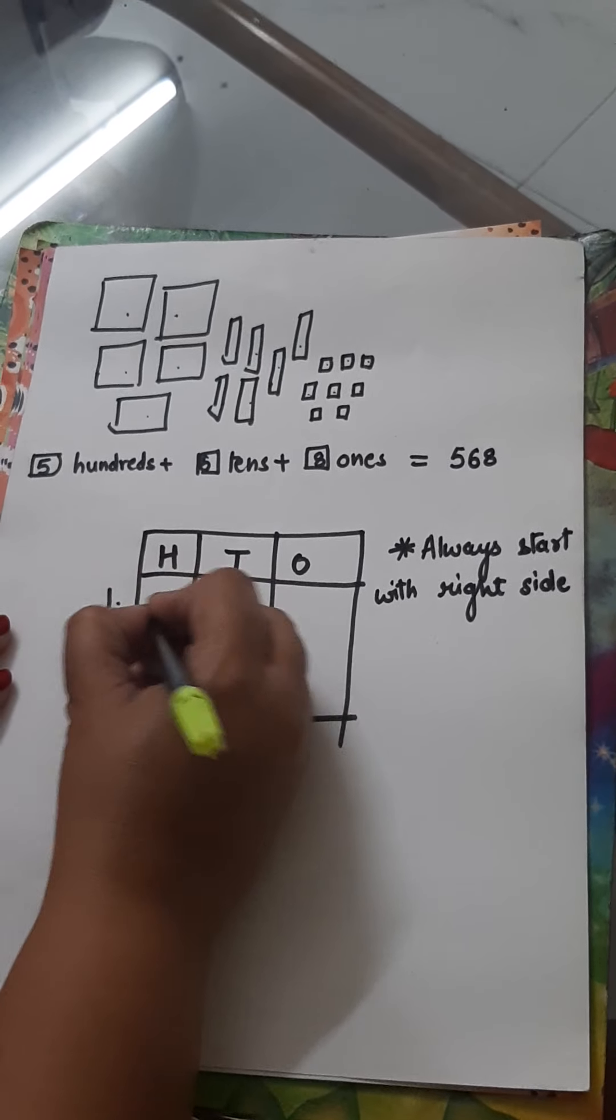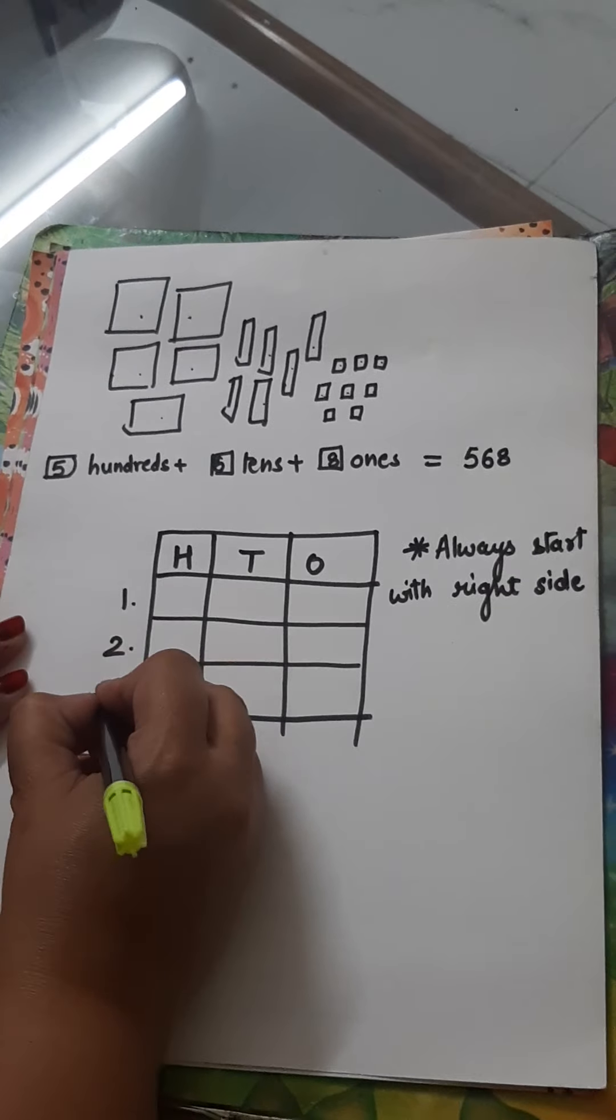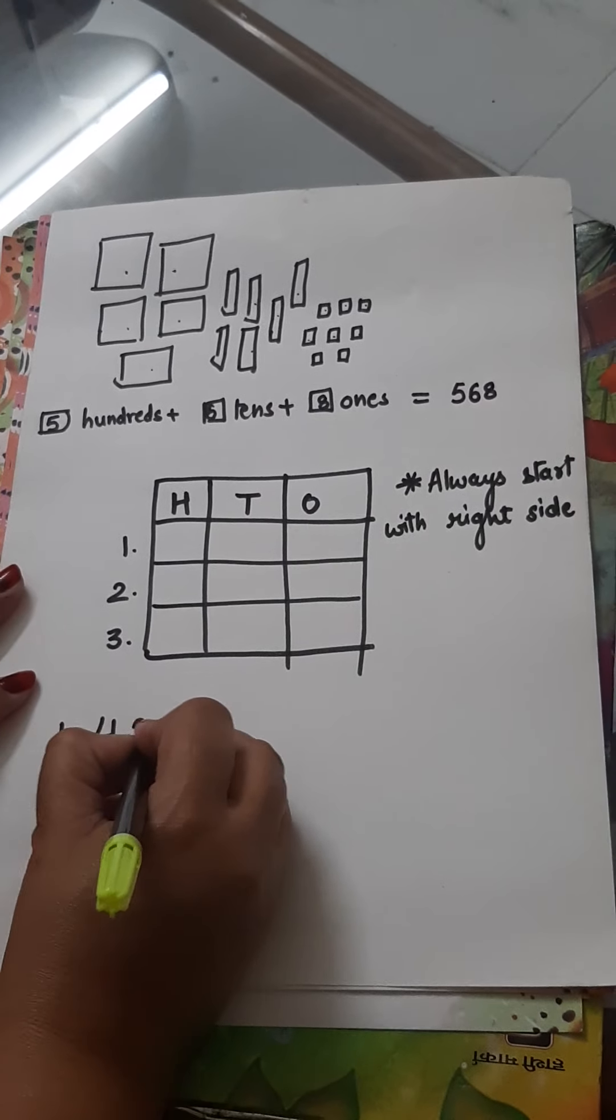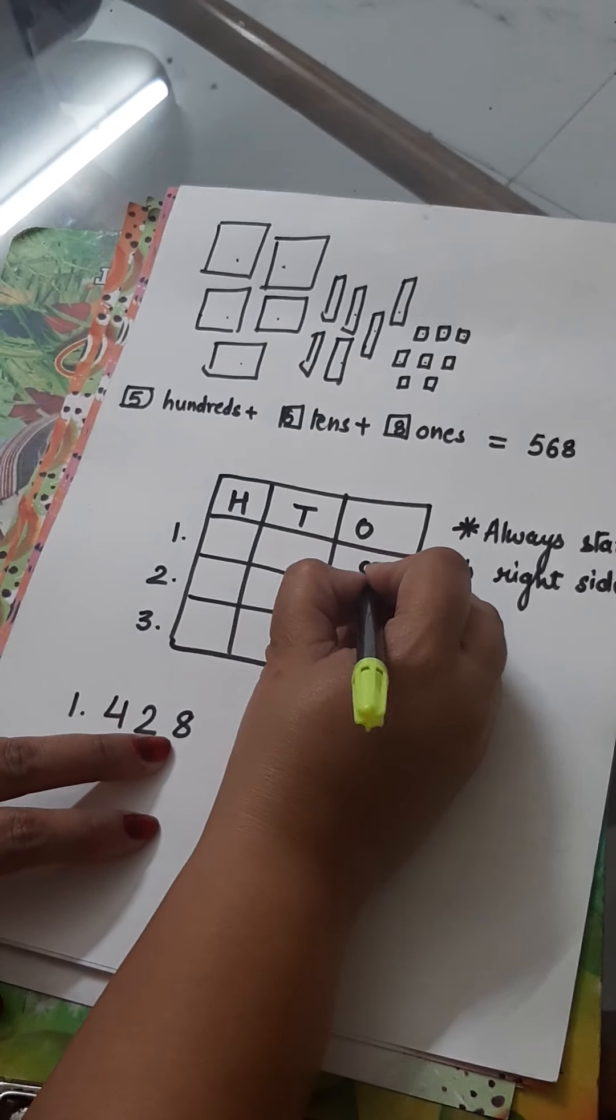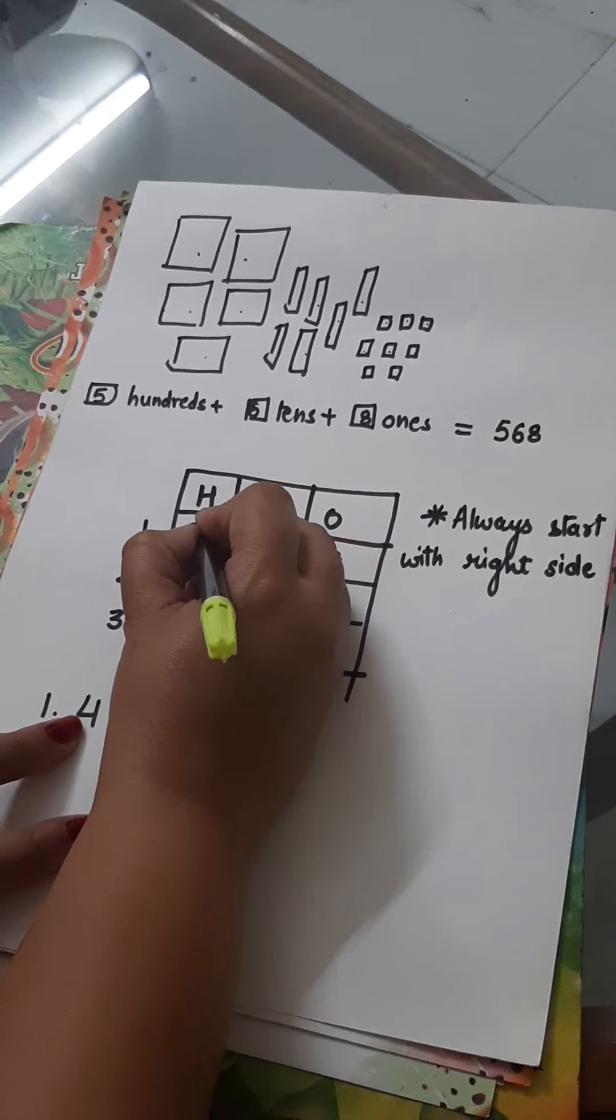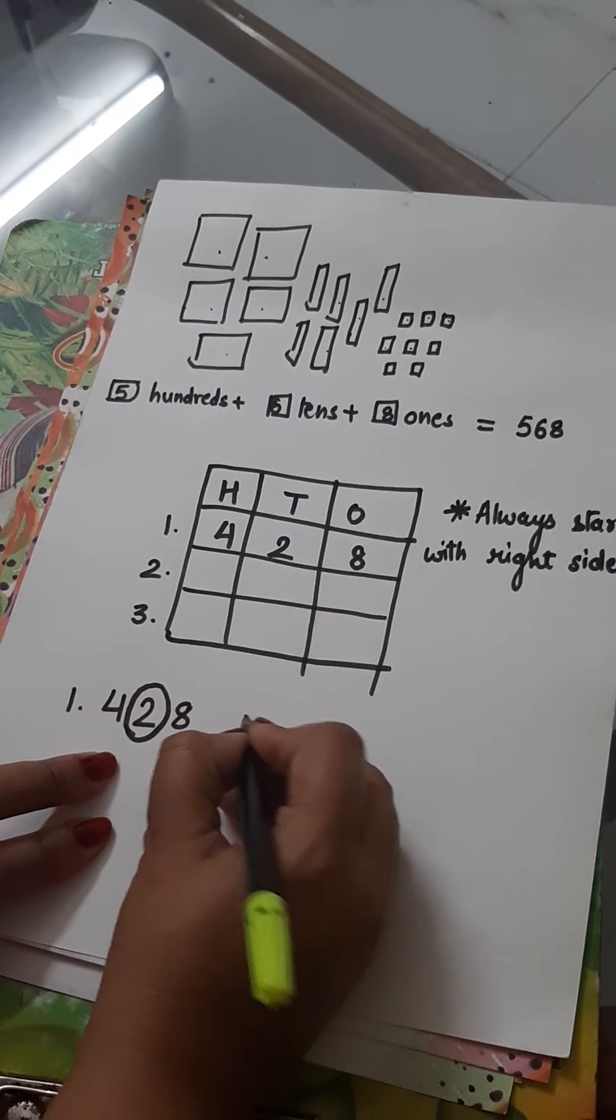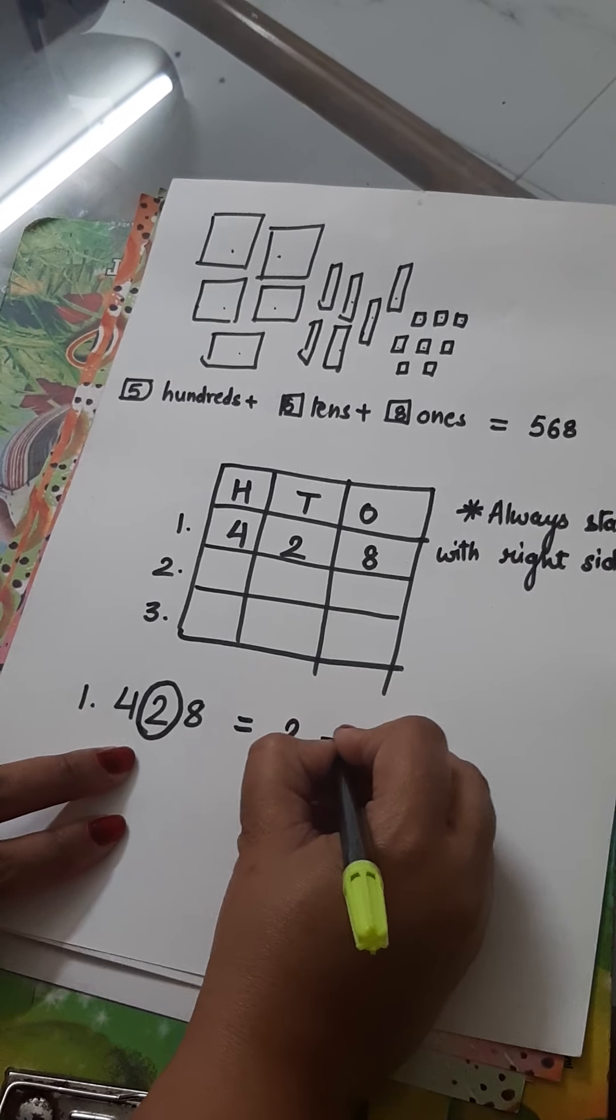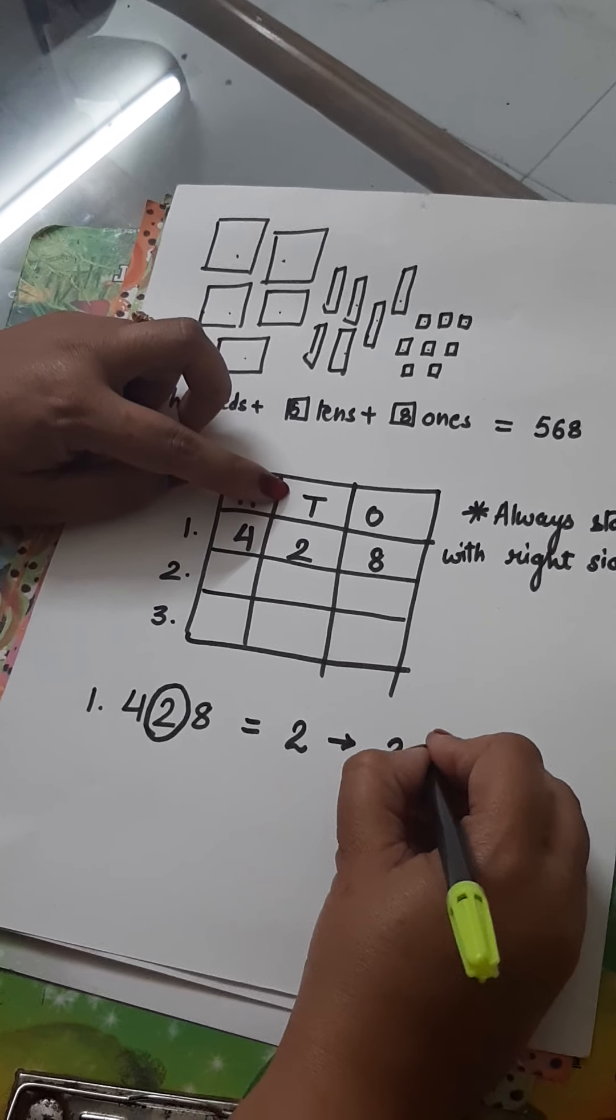Number 1 is 428. Start putting the numbers from here. 8, 2, 4. Now, if I ask you, what is the place value of 2? The place value of 2 is 2T, that means 2 tens.